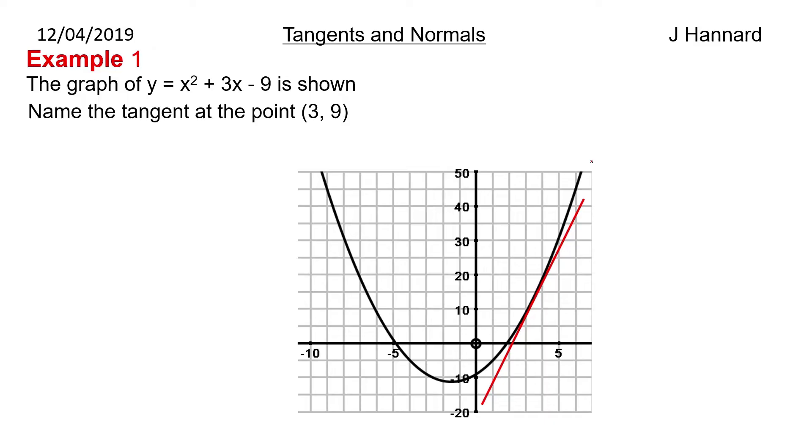Example 1 then. The graph of y = x² + 3x - 9 is shown. Name the tangent at the point (3, 9). So we need two things to name a line: we need a point and the gradient, and one thing we don't have is the gradient. So what we're going to have to do is use the gradient finder or differentiate that piece of algebra.